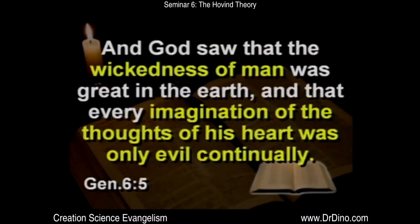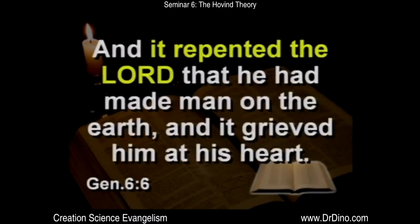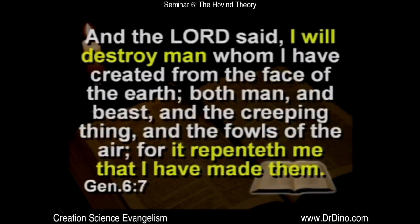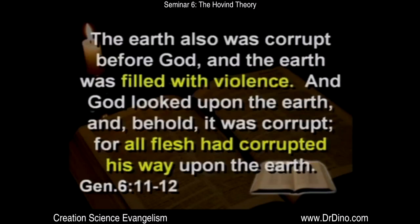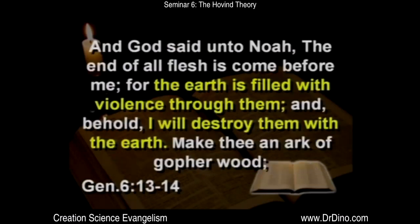Genesis chapter 6 — this is mostly what we're going to focus on today. God saw the wickedness of man was great in the earth and the imagination of the thoughts of his heart was only evil continually. And it repented the Lord that he had made man on the earth and it grieved him at his heart. The earth was filled with violence. Everybody was wicked. And God said, 'That's it. Noah, go build a boat.'